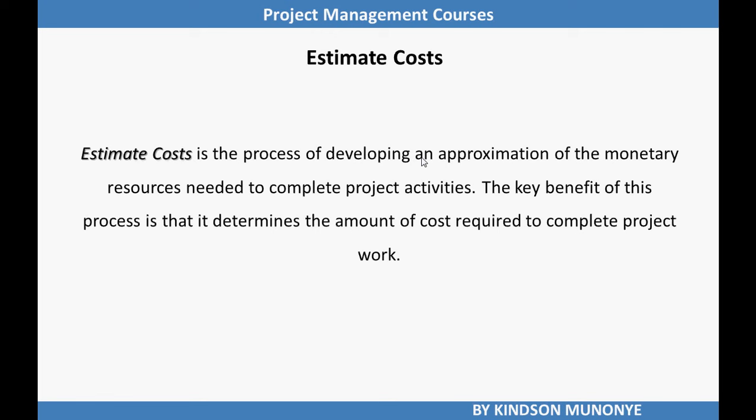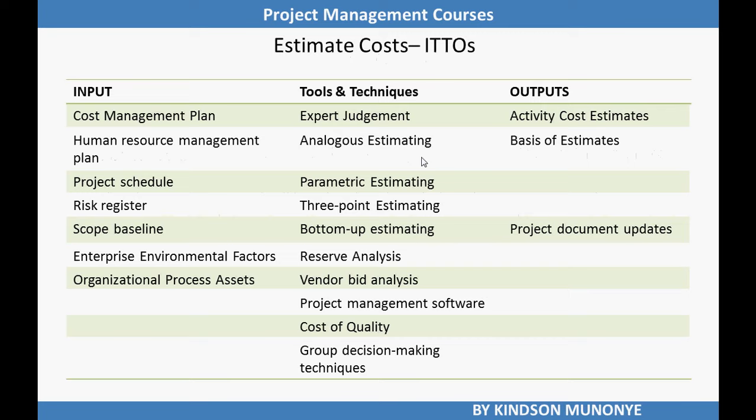Let's now look at the ITTOs of estimate costs. The inputs are: cost management plan, human resource management plan, project schedule, risk register, scope baseline, enterprise environmental factors, and organizational process assets. Tools and techniques include: expert judgment, analogous estimating, parametric estimating, three-point estimating, bottom-up estimating, reserve analysis, vendor bid analysis, project management software, cost of quality, and group decision making techniques. The outputs are three: activity cost estimates, basis of estimates, and project document updates.